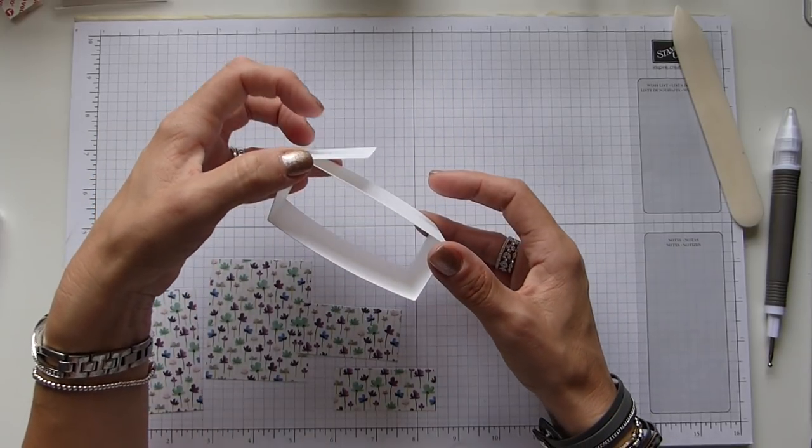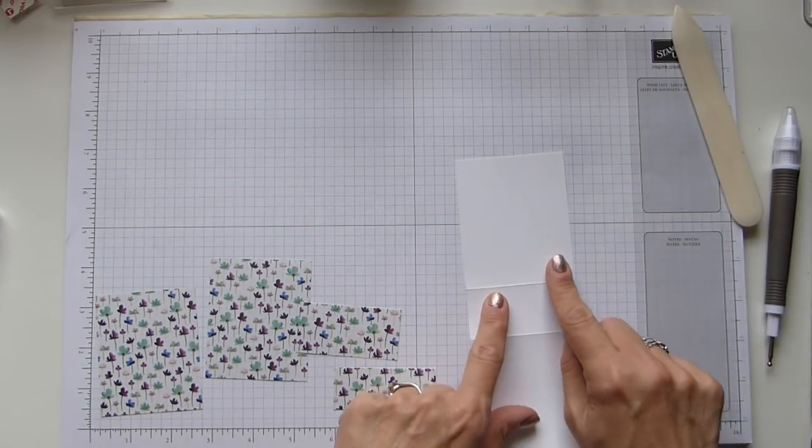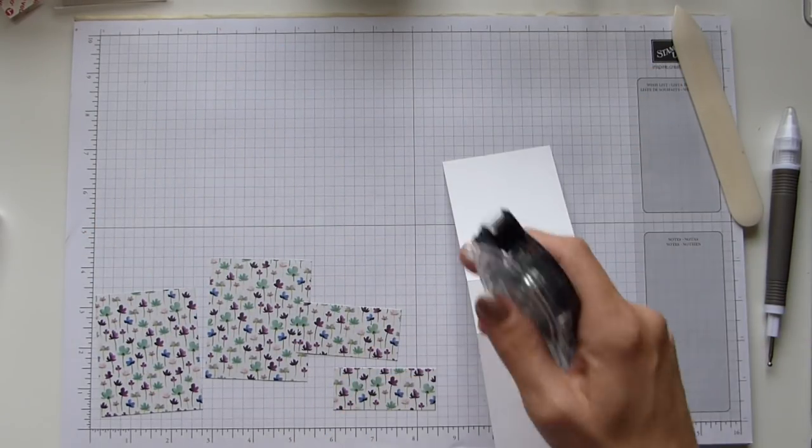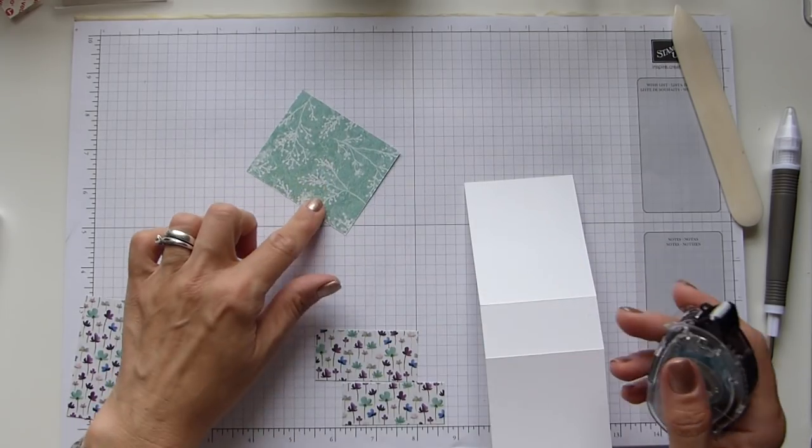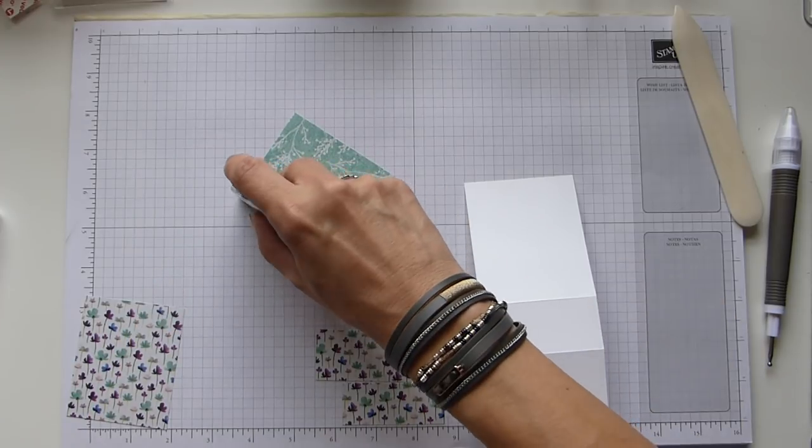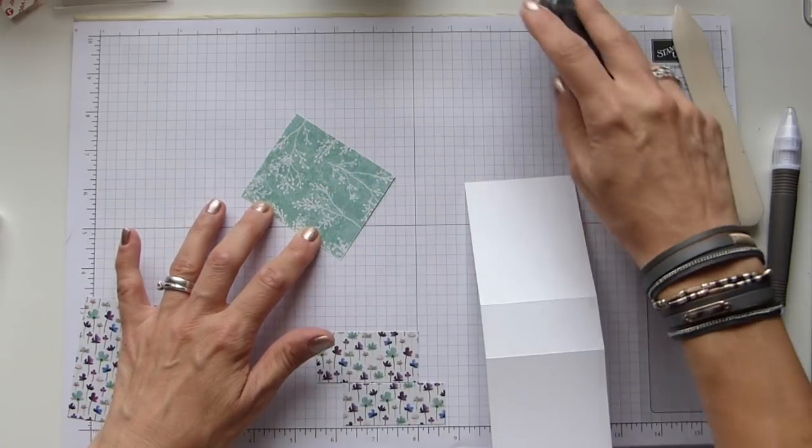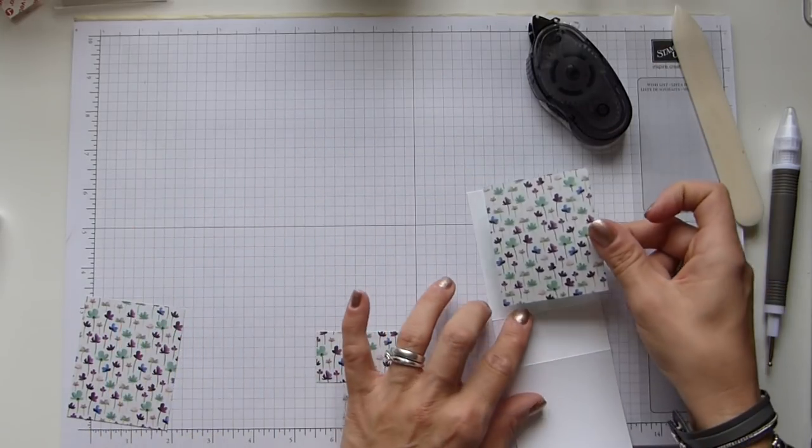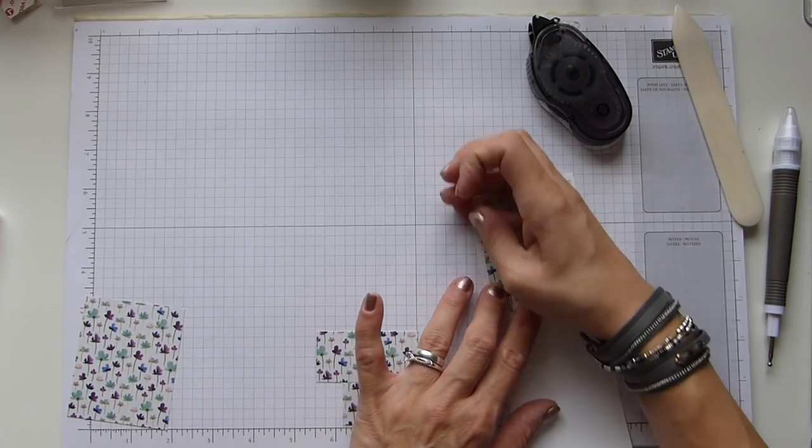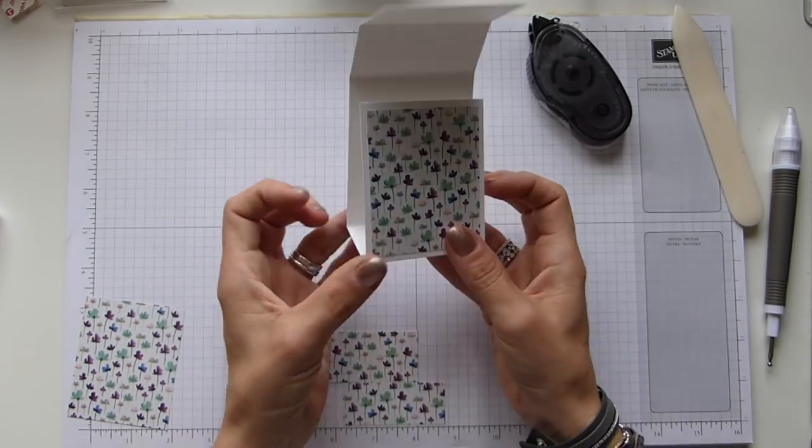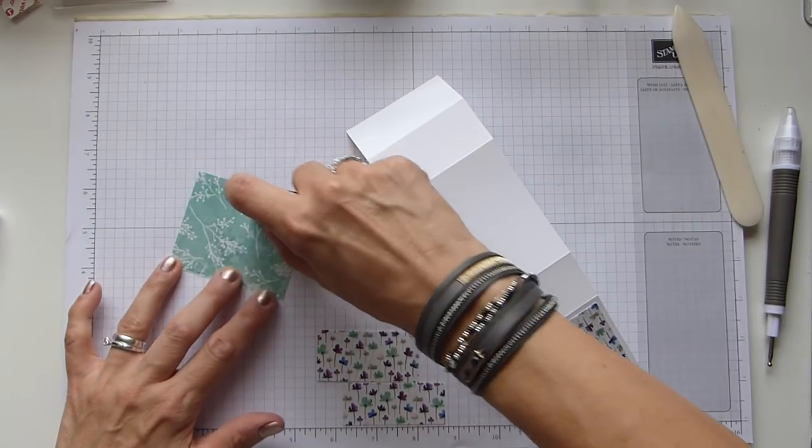I'm using the First Frosted Floral beautiful pearlized paper. You will need, if you've got directional paper, make sure you put it on the right way. This is how it will close up. So this is your front. My first piece of DSP is going on here.